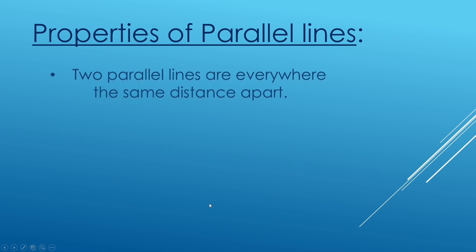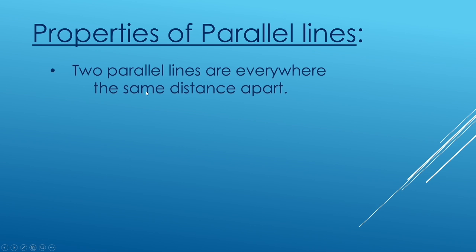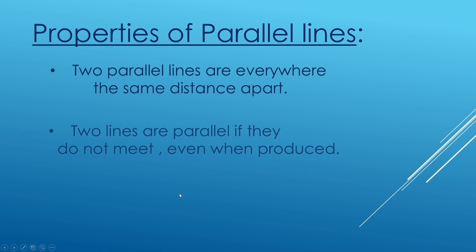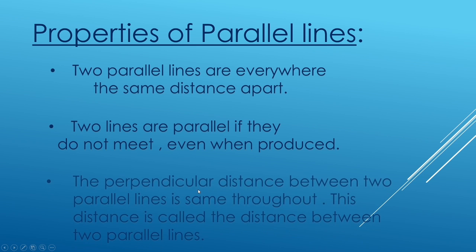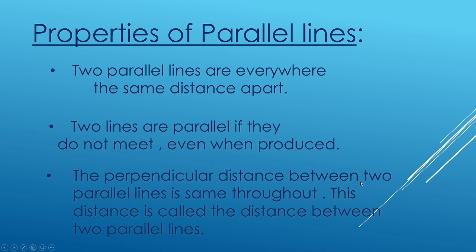Activity conclusions: We can conclude that two parallel lines are everywhere the same distance apart. Two lines are parallel if they do not meet even when produced. The perpendicular distance between two parallel lines is the same throughout — measured using the right-angle set square — and this distance is called the distance between the two parallel lines. Thank you.